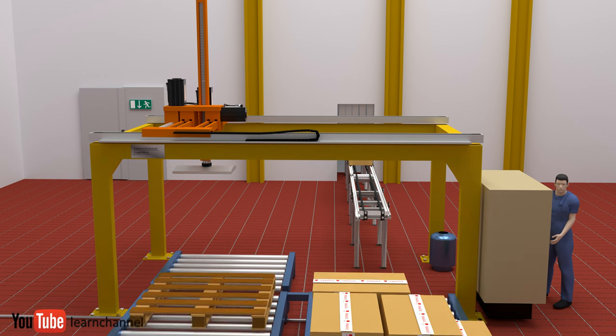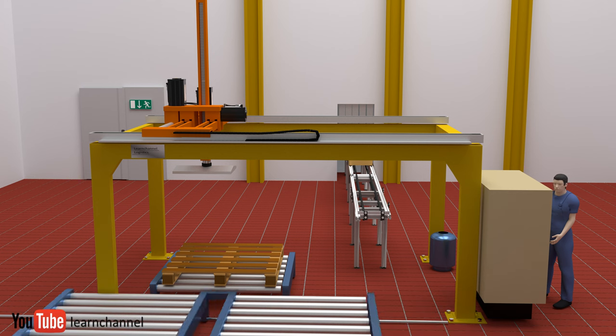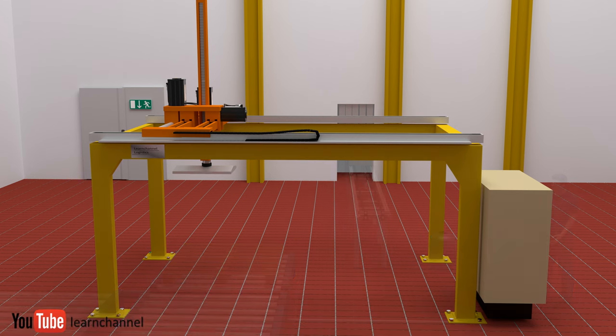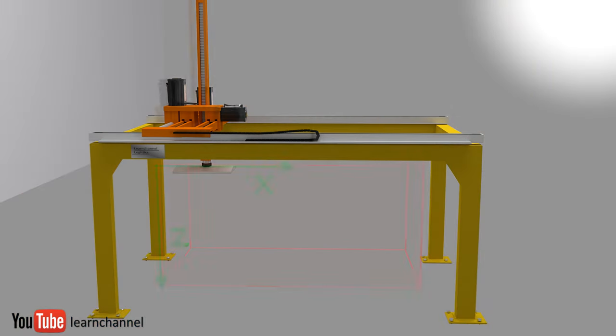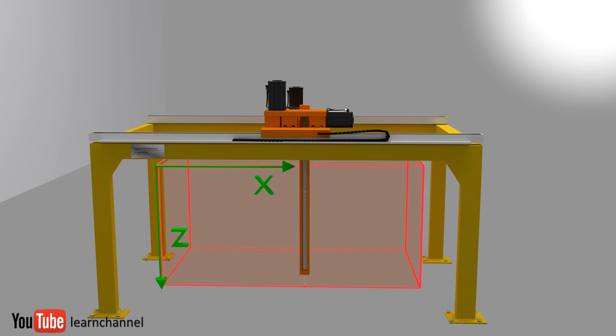Gantry robots are easy to program with respect to motion because they work with an XYZ coordinate system. The workspace has the shape of a rectangle.